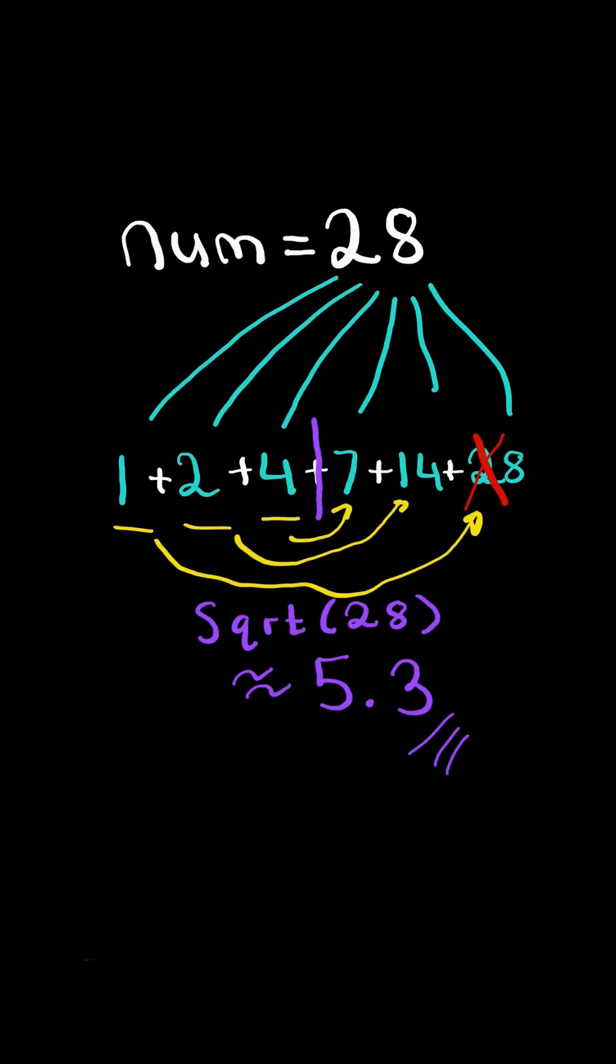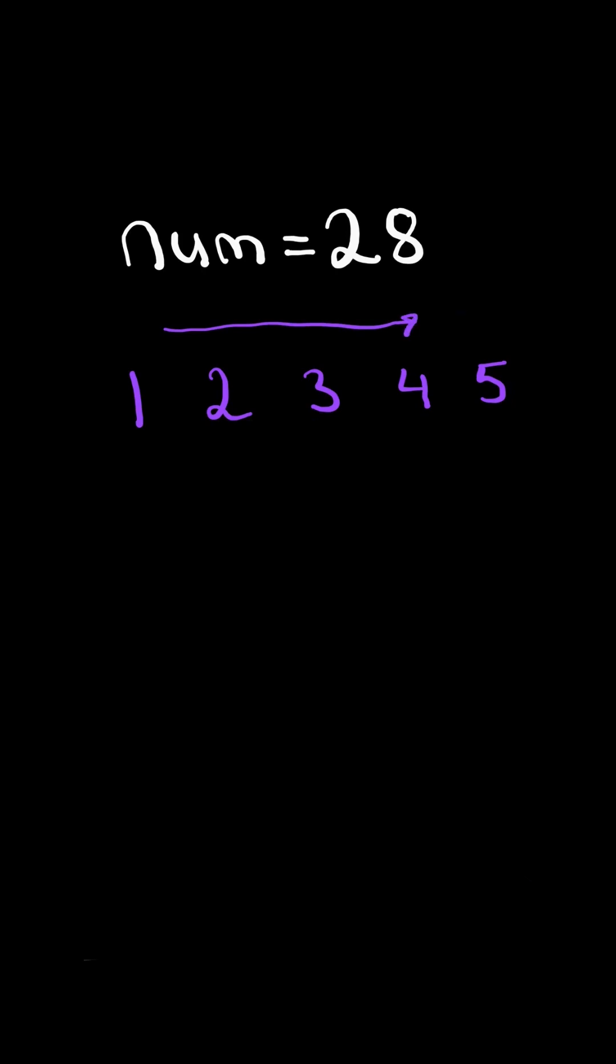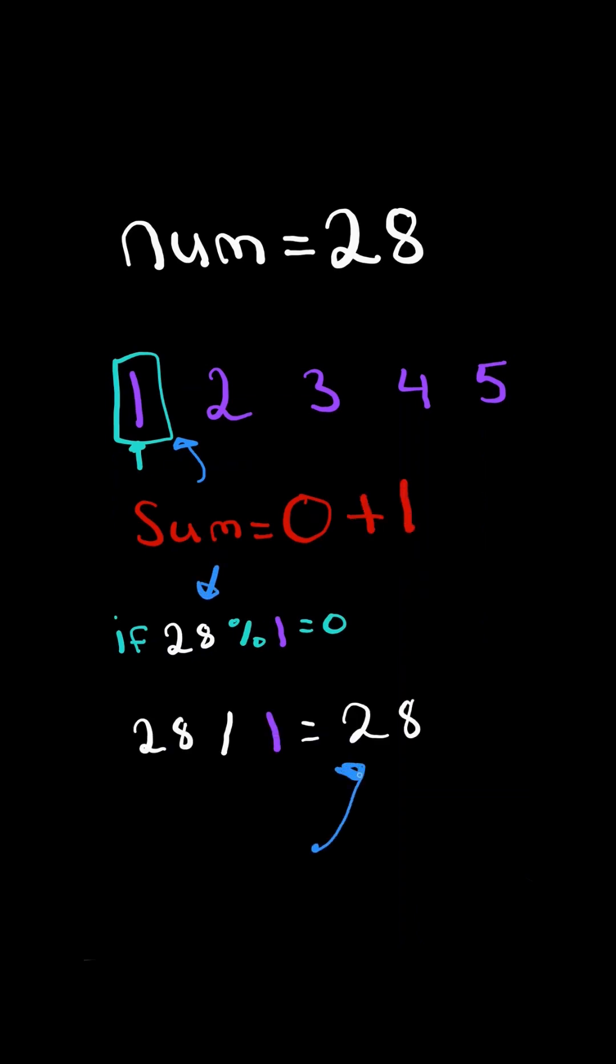So all we need to do is iterate from 1 to roughly the square root of num and keep a running sum. If the integer is divisible by the number, we add the integer to our sum, then we find its associated pairing. Since the pairing is the same as the number, we don't add it to our sum, and we continue.